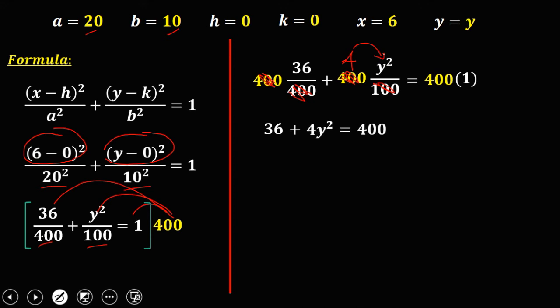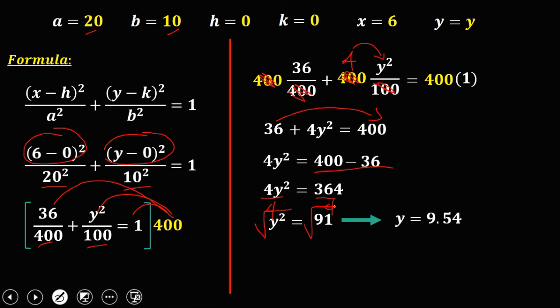Then to solve for y, transpose this 36 to the right side, so it becomes negative. Then 400 minus 36, then divide this one by 4. So y² now, that's 91, and taking the square root of 91, so y now is 9.54. So this is the height.